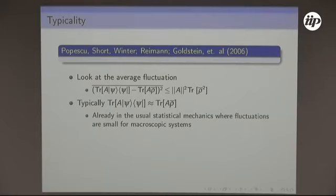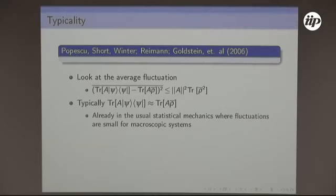This is actually in standard textbooks of statistical mechanics — it's nothing more than proving that fluctuations are small when you use the canonical or microcanonical ensemble. What we're doing here is putting this in a more rigorous setting, doing the full analysis in quantum mechanics. You don't have to say anything about the Hamiltonian — it's very, very general, which is good on one side, but also bad, as I'll mention.